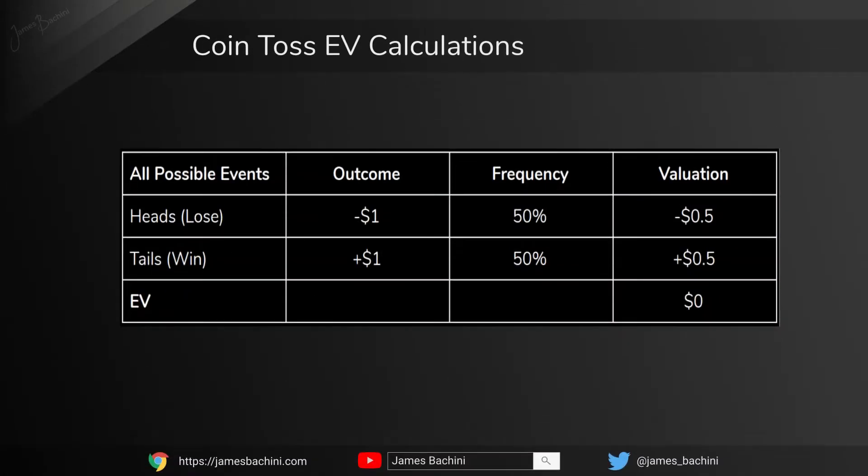With a coin toss, for example, we toss a coin and there's a 50-50 chance of it coming down heads or tails. If it's heads we win; if it's tails we lose — so we either lose a dollar or we win a dollar. Therefore 50% times minus one, plus 50% times plus one, add those two values together and we get an EV of zero. It's neither positive nor negative — if we toss the coin enough times our return on investment will be flat.